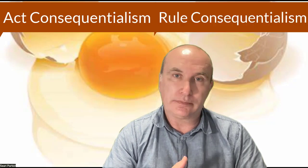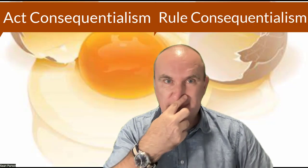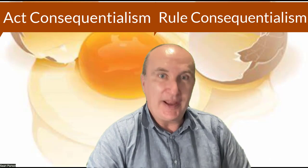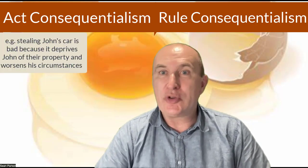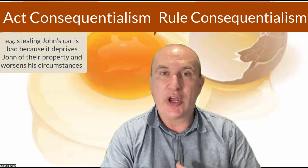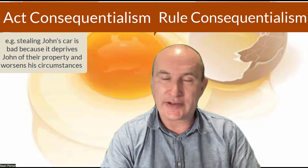Because utilitarianism and consequentialism have a number of objections to them, which I'll show later on, consequentialists have developed a few versions of the theory. Two of the main ones are act consequentialism and rule consequentialism. Some consequentialists adhere to act consequentialism, where the utility or good consequences of each act defines the moral worth of that act.